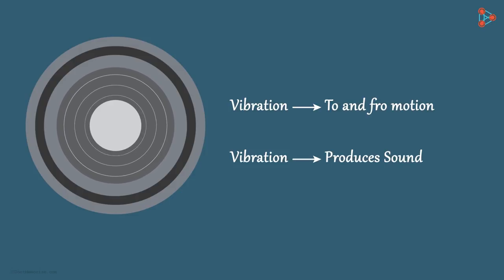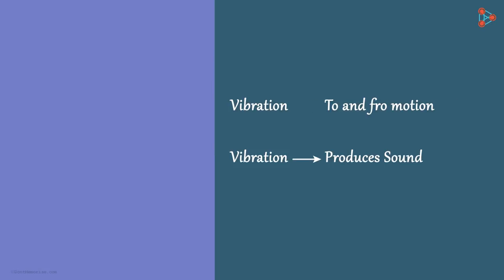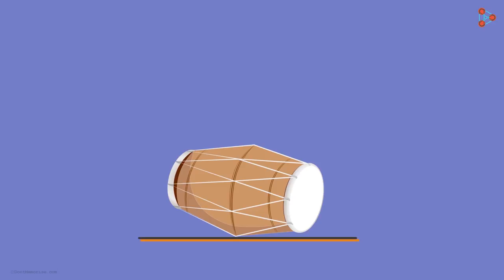Some vibrations we can clearly see, but some we can't. Are you familiar with this shape? What is it called? It's called a dholak.